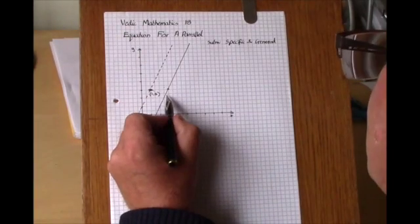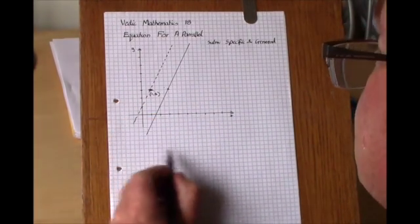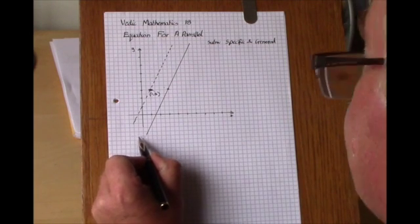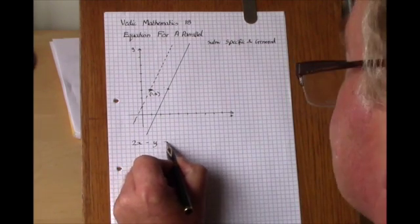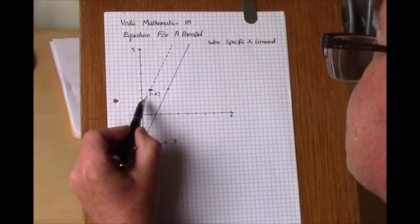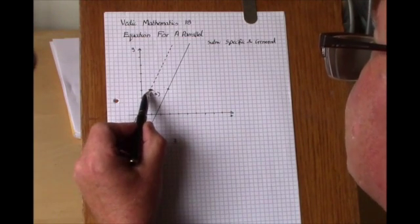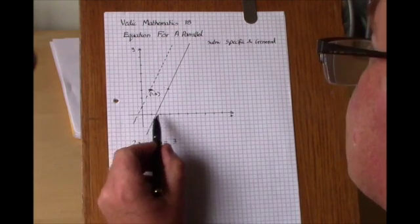This example starts with this line which, as in the previous video, has equation 2x minus y equals 3, and this dashed line is the line parallel to it going through the point. We need to see how to find its equation.